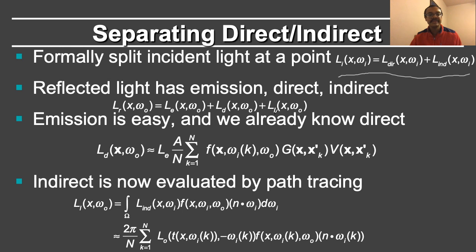Earlier, the direct and indirect components were all rolled into a single integral. The emission is easy — we simply add the emission term when we encounter a light source. We already know the direct component: you've already sampled over the light source with geometry, visibility terms, and the area. So really, all we need to do is evaluate the indirect lighting by path tracing.